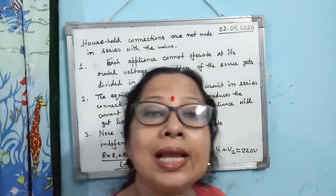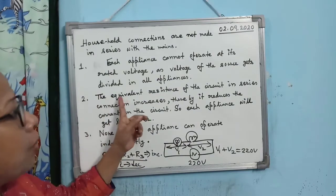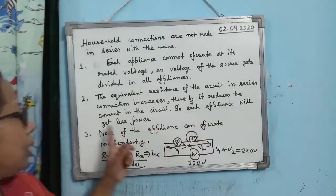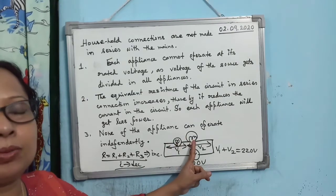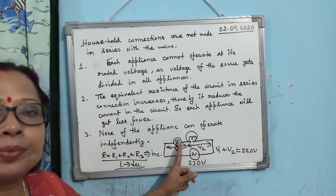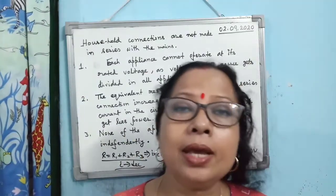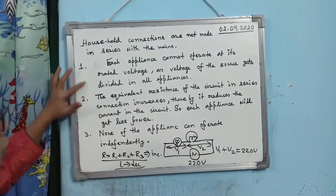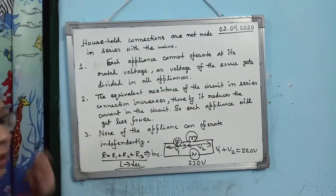Third, when the current decreases, the electrical power each appliance receives is also reduced. Furthermore, none of the appliances can be operated independently — if you switch off the fan, the bulb will not work, and if the bulb is fused, the fan will not work either. One appliance is affected by the presence or working of the other. These are the three reasons why household connections are never done in series.